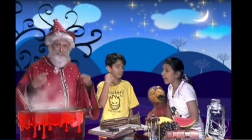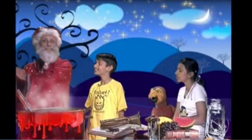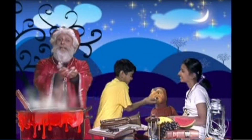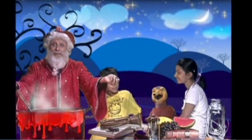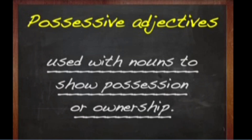Now, Wiz says that his, hers, ours, theirs, yours, mine are also pronouns. Time to eat. This is my toffee and this is mine. These are our toffees, children. Bye. Let's see if we can remember what we have learnt. My, your, his, her, its, our — these are the English possessive adjectives used with nouns to show possession or ownership.